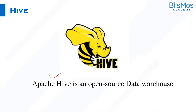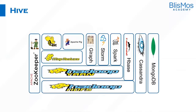Hive is an open-source data warehouse. We already understood that a data warehouse is a technology to get data from multiple sources, compare it, and aggregate it. Hive sits in the Hadoop ecosystem diagram on top of MapReduce.